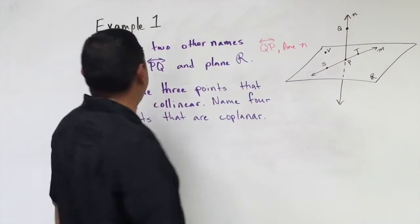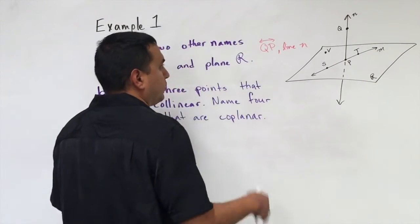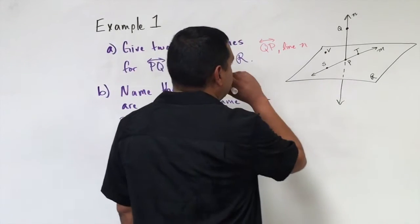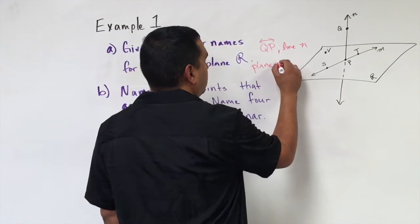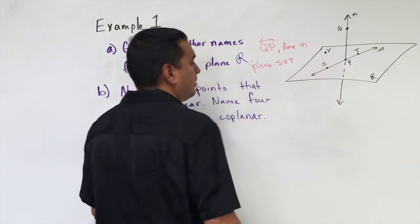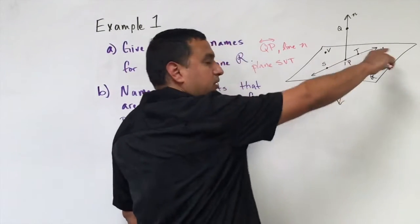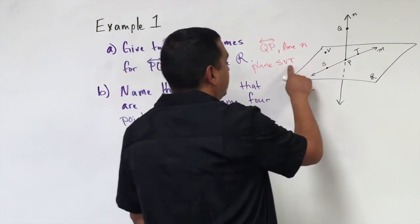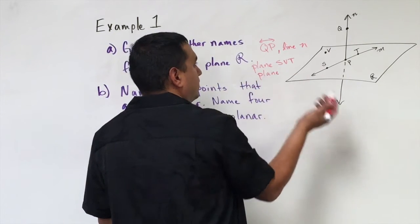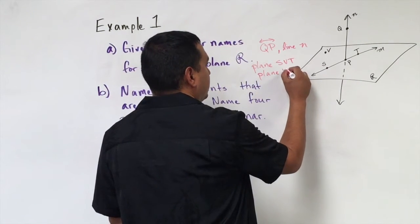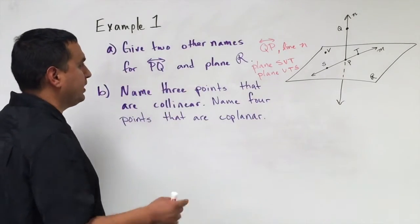Another name for plane R, I need three non-collinear points, so three points that are not on the line. So I could call it plane S, V, T. I can't call it S, P, T, because those are on the same line, but I can say plane S, V, T. You could also call it plane, we could change up the letters, we could say V, T, S. That would be another example, or another way to name plane R.